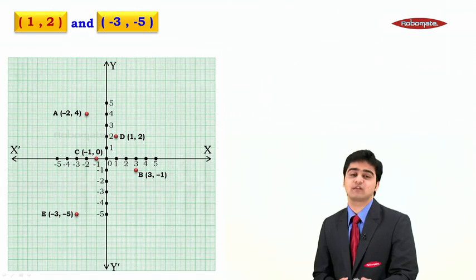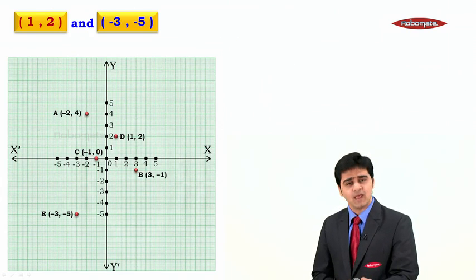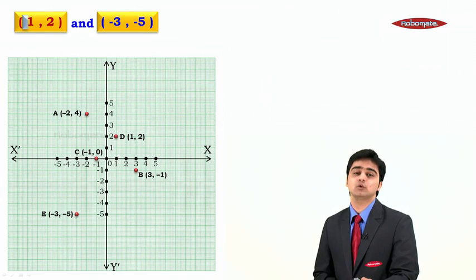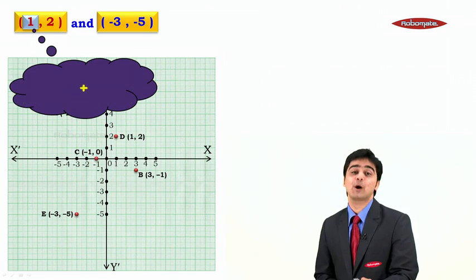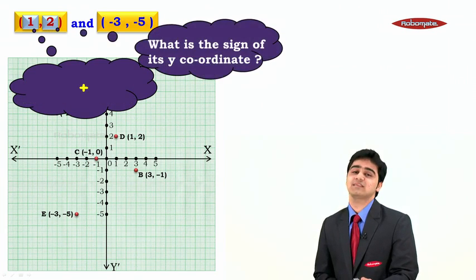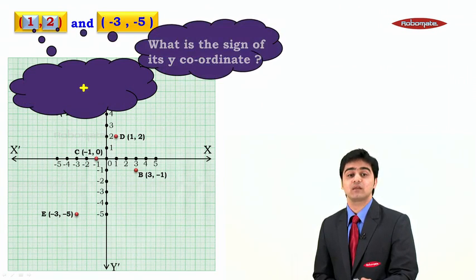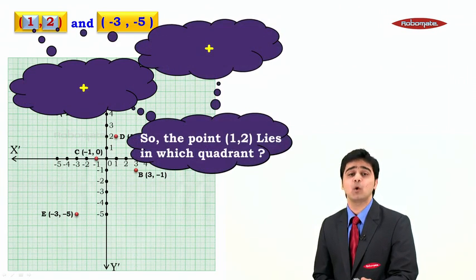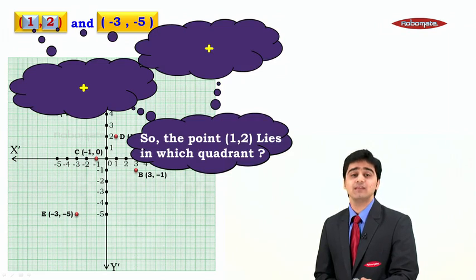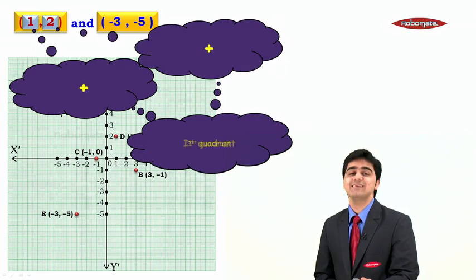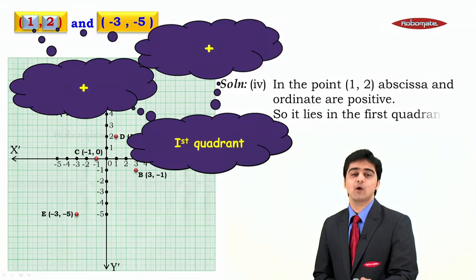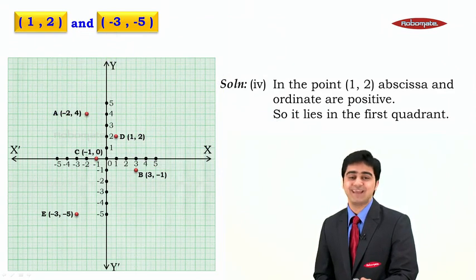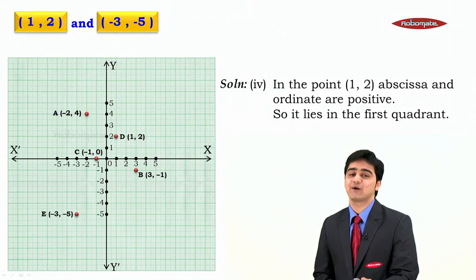The next point has got its coordinates to be 1 comma 2. The sign of its x coordinate is plus, and the sign of its y coordinate is also plus. So the point 1 comma 2 lies in the first quadrant. In the point 1 comma 2, the abscissa is positive and the ordinate is also positive, so it lies in the first quadrant.